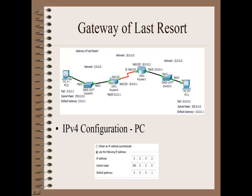We have PC0 on the left side and PC1 on the right side. Connecting to the PCs we have switches and then two routers. The first network is network 5.0.0.0 - it's a class A network so the subnet mask is 255.0.0.0. Then we have a second network connecting the two routers together using a serial line, and that's going to be 10.0.0.0. Then we have a third network connecting that last PC to the router, which is going to be network 15.0.0.0.